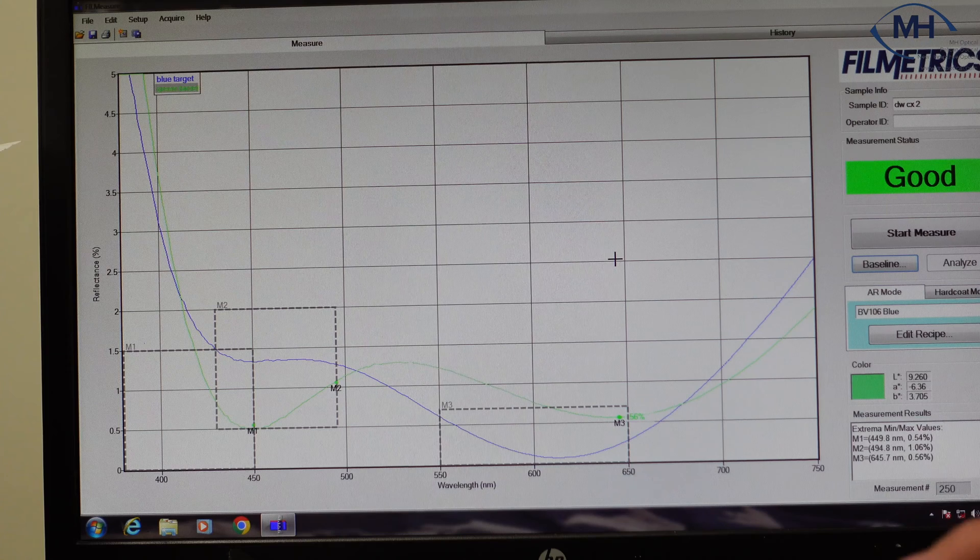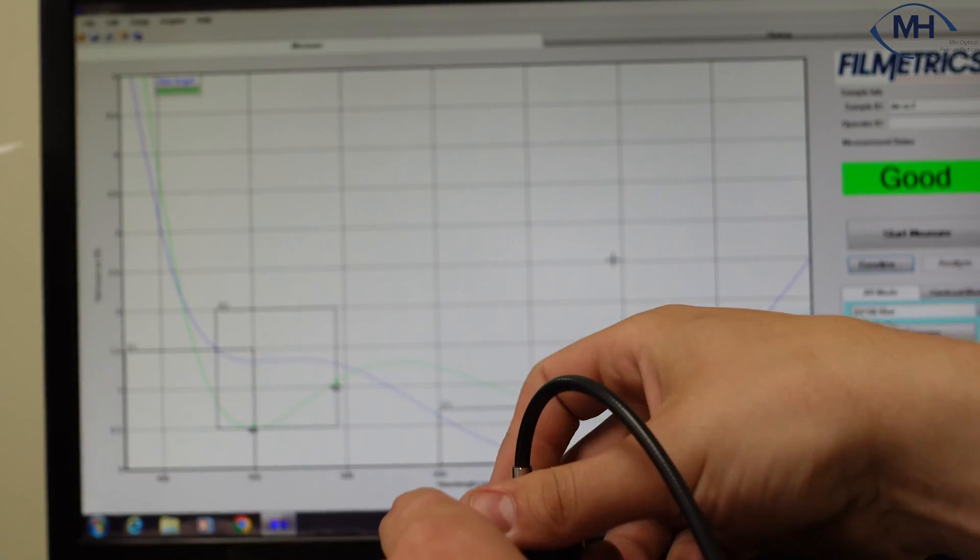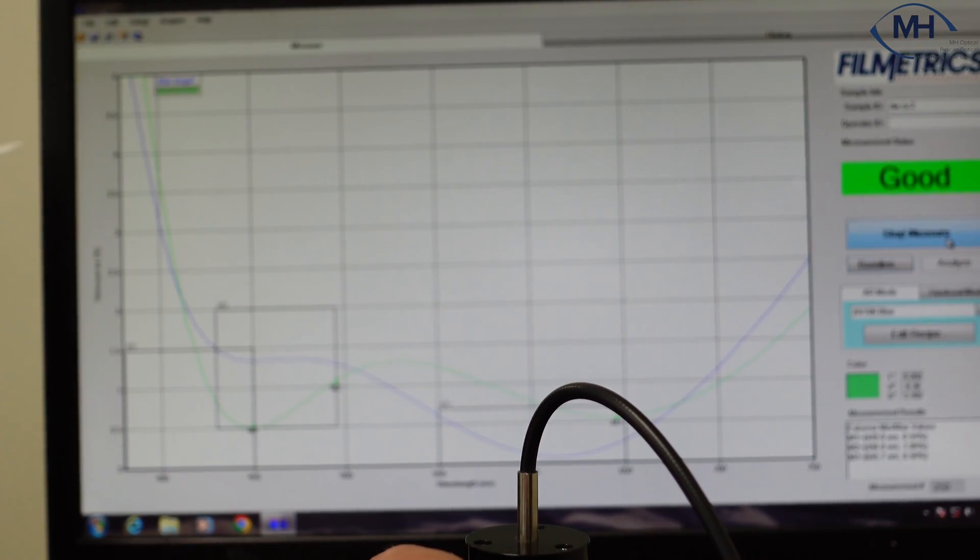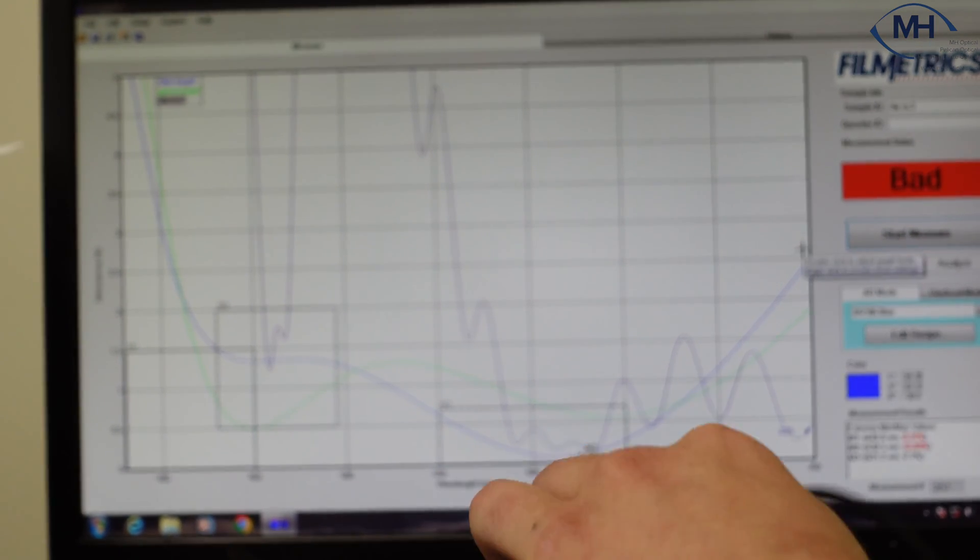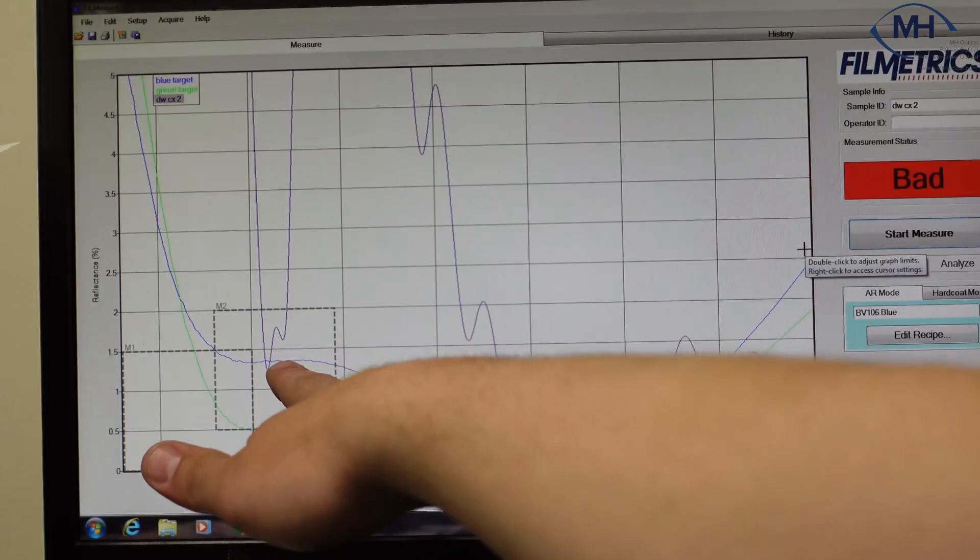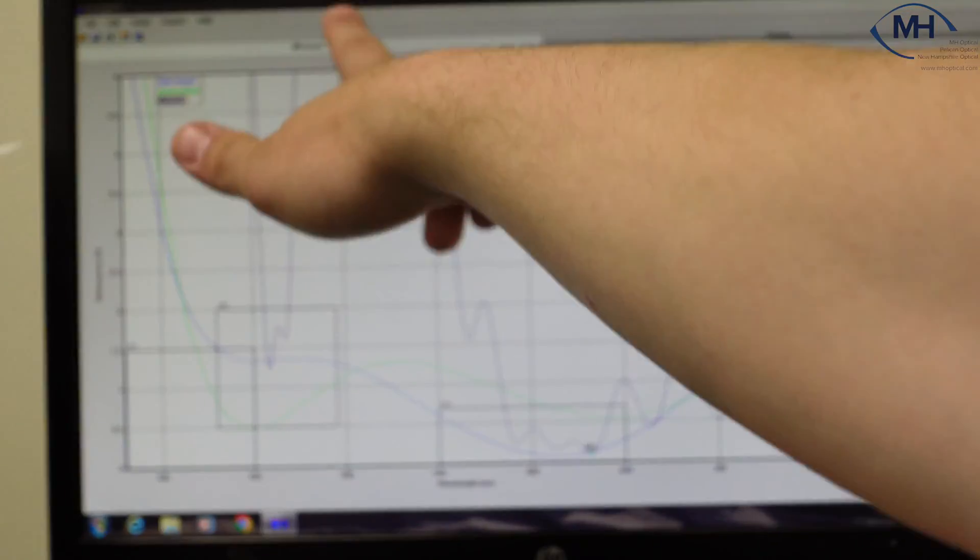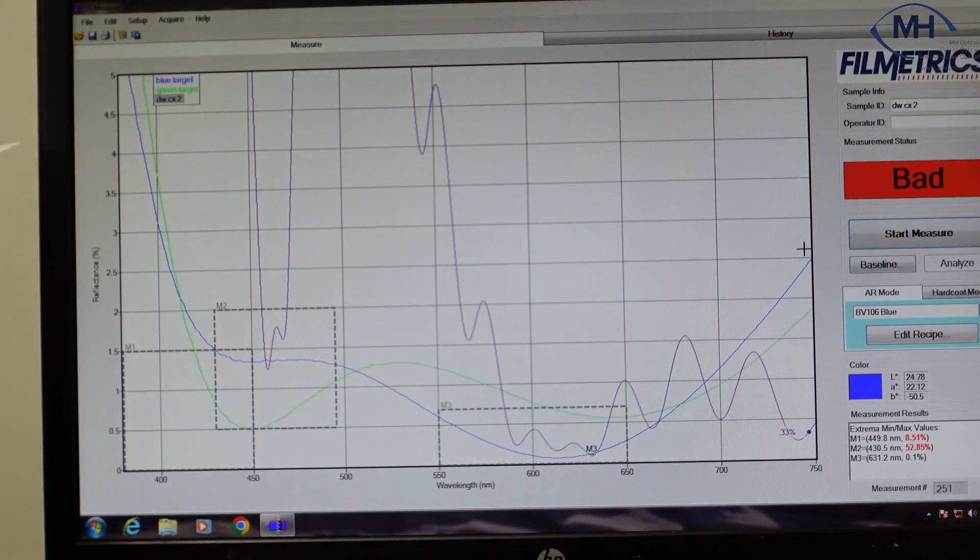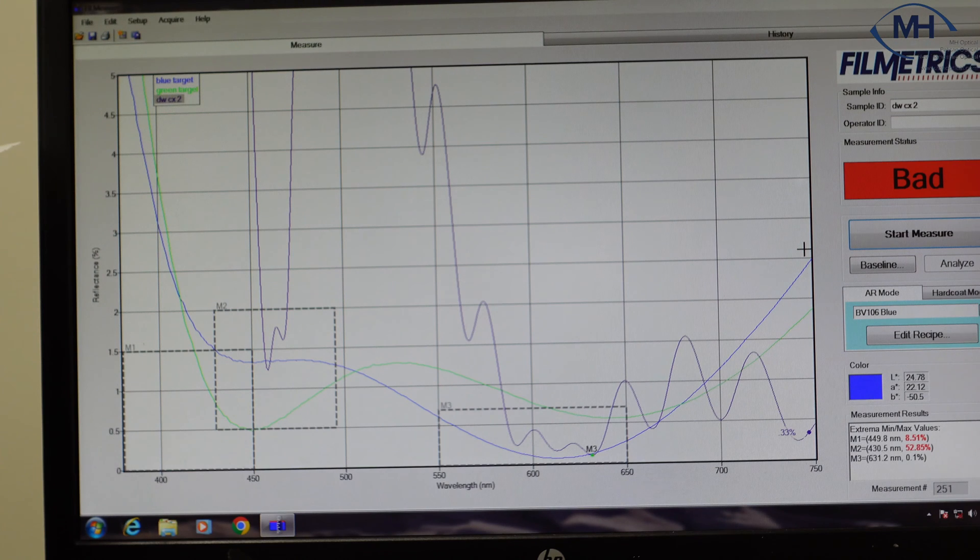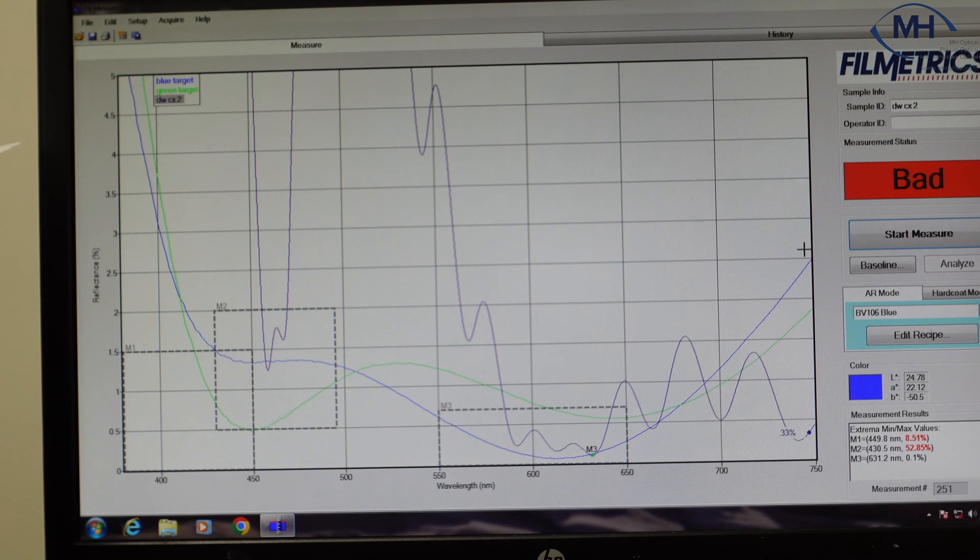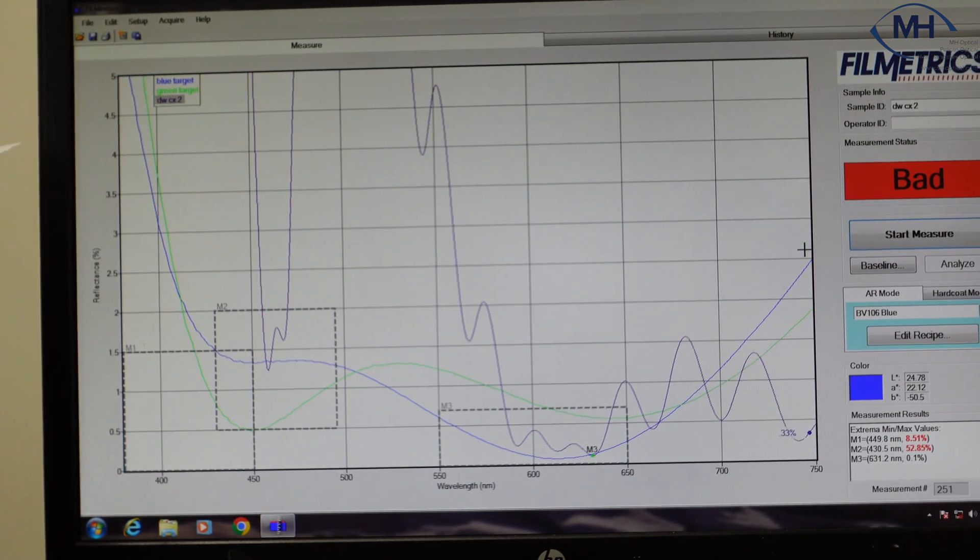So for an example, just so we can see, we'll shoot one of these blue blocking lens and we can see the reflectance shoot all the way off of our map here. Now it is a blue color, so you see how it lines up correctly with the blue, but our reflectance is very high. That's the difference between a blue blocking AR and the actual AR, where we're allowing light to pass through the lens instead of blocking it.